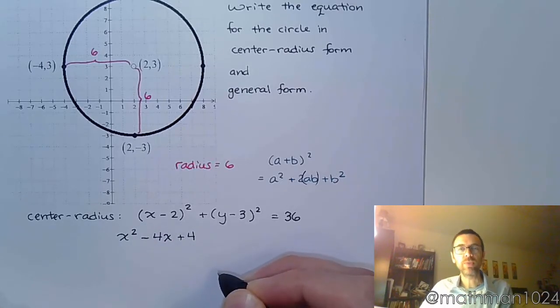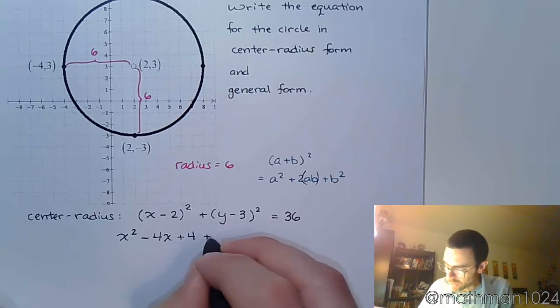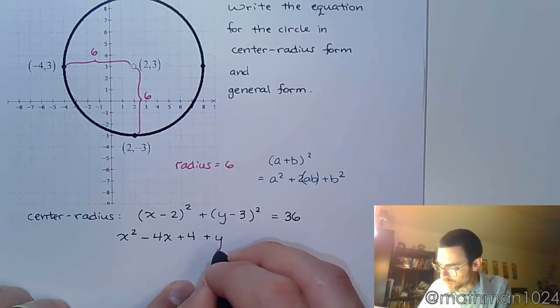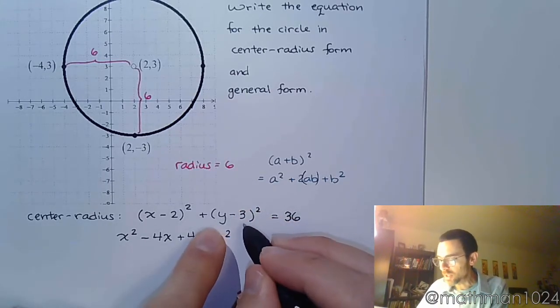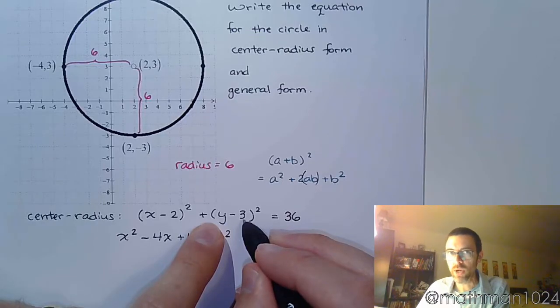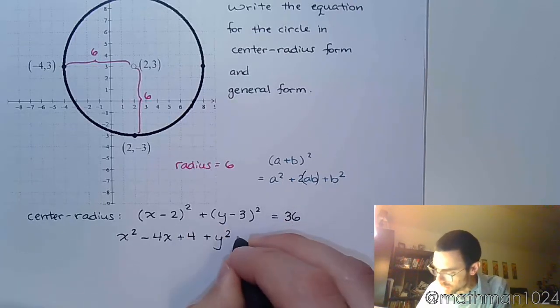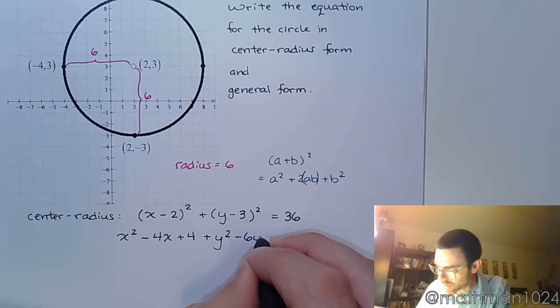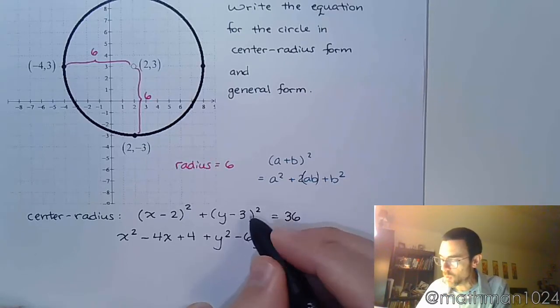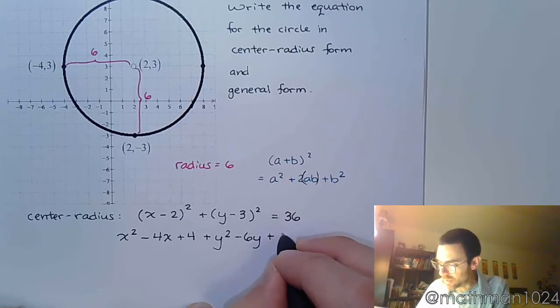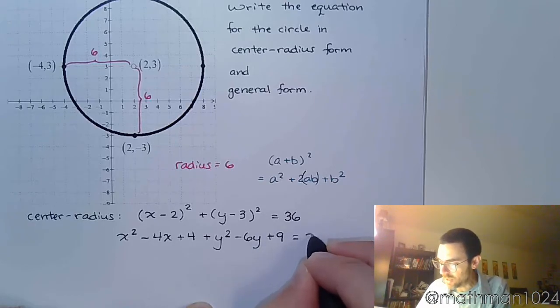And I do the same thing for the y. So squaring this, I get y². The product of these two pieces is negative 3y times 2 is negative 6y. Square the negative 3, I get positive 9. And this equals 36.